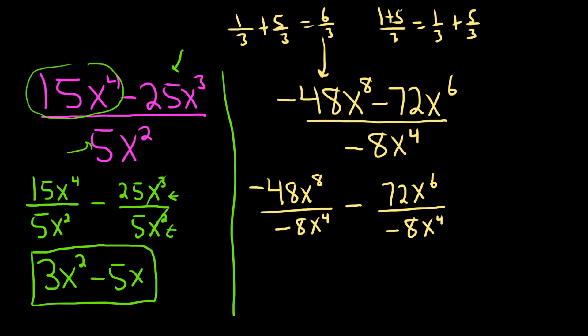48 over 8 is 6. They're both negatives, so we're going to get a positive. And then x to the 8 over x to the 4. Well we're losing four copies of x. So there's eight of them up top, so we're left with 4. Because 8 minus 4 is 4.